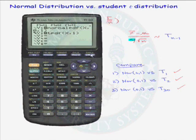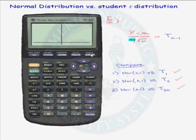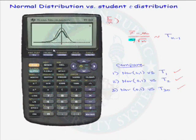Let's go ahead and graph it. The first graph shown is our standard normal distribution — notice there is very little area below negative 3 or above 3. The second graph is our t distribution with 1 degree of freedom. Notice that there is some area way out at negative 6 and all the way up to 6.